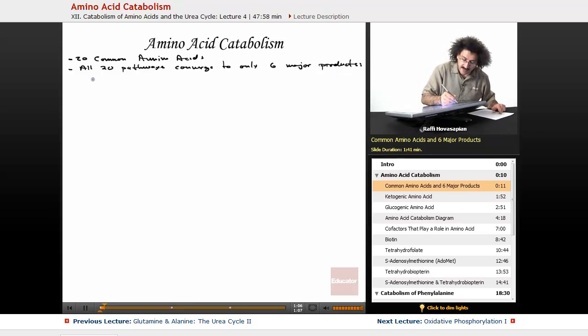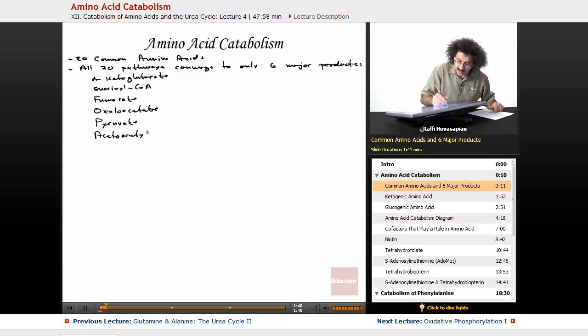So we have alpha-ketoglutarate, succinyl-CoA, fumarate, and you'll recognize these as citric acid cycle intermediates. We have oxaloacetate, pyruvate, and acetoacetyl-CoA, which actually goes on to become the ketone bodies.